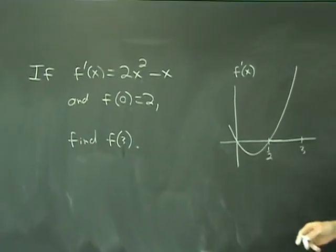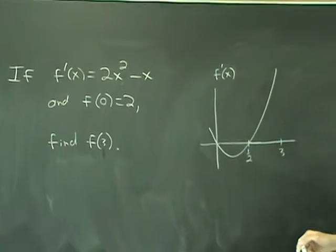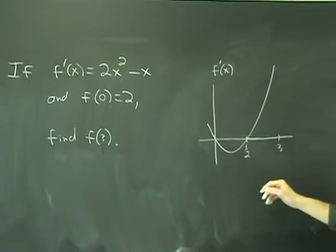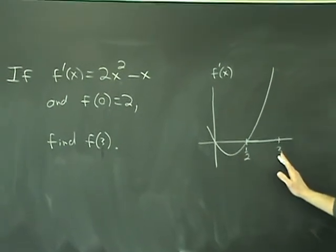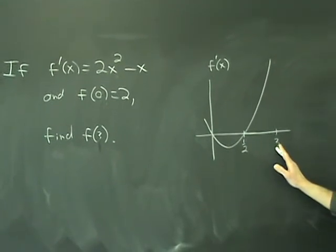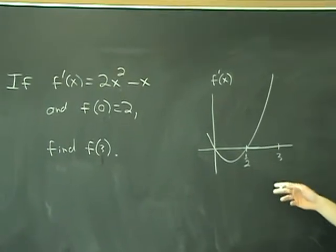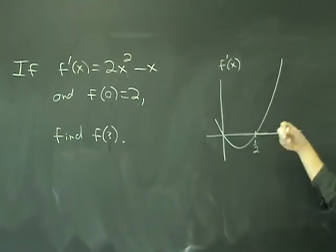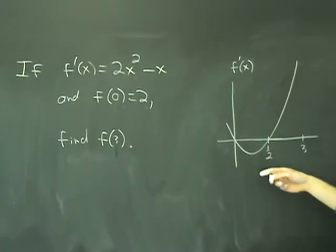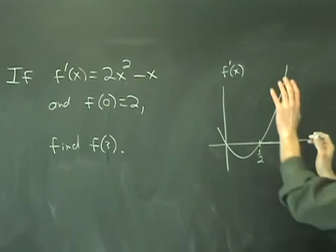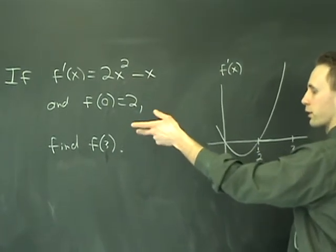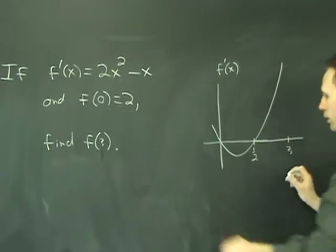Here's the graph of f prime. It goes like so. They told you that f of 0 is 2, and they want to know what f of 3 is. Judging from the graph, you would expect f of 3 to be greater than f of 0, because, well, to get f of 3, you're going to add to 2 the accumulated change that f undergoes from 0 to 3.